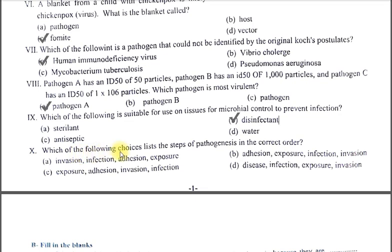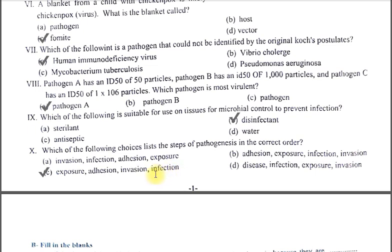Next question: which of the following choices lists the steps of pathogenesis in the correct order? The correct order is option C: first there is exposure to the pathogen, the pathogen enters, then it adheres, then it invades, and finally the infection process is completed.